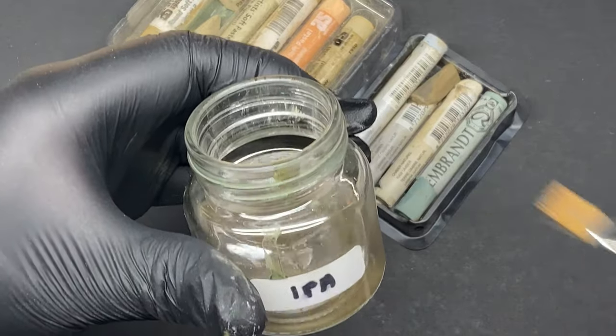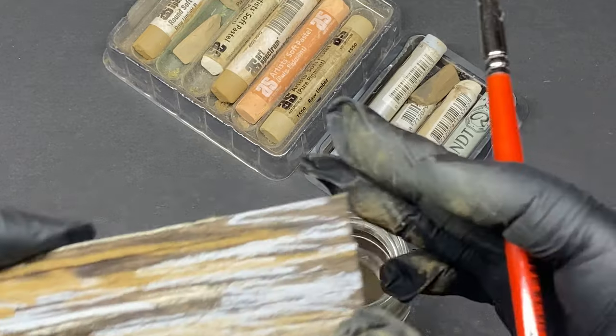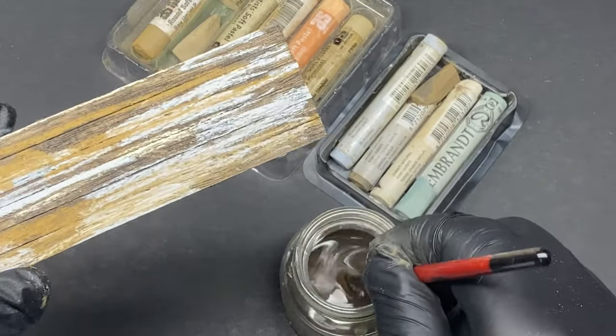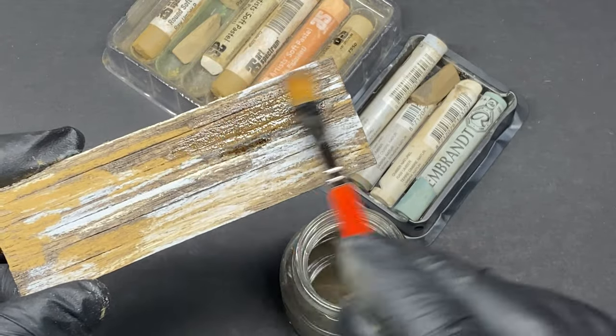Now grab a jar of alcohol and it's time to turn the pastels into a color wash. Brush the alcohol on, working with the direction of the grain. The alcohol does a great job of washing the pastels deep into the timber with a nice matte finish.